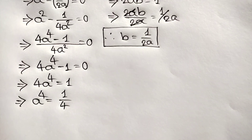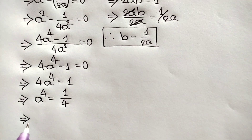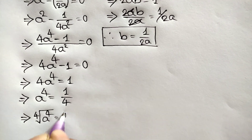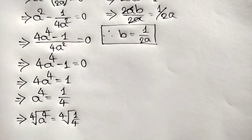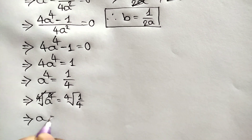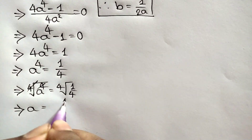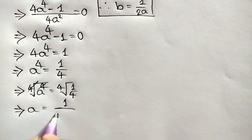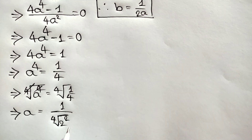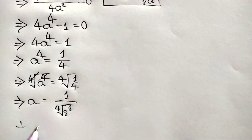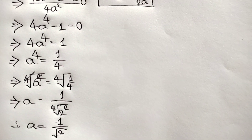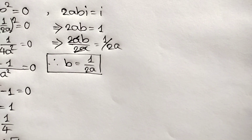Dividing both sides by four, we get a to the power four equals one over four. Taking the fourth root of both sides, the fourth root cancels with a to the power four. Since four equals two squared, we get a equals one over the square root of two.